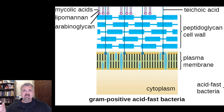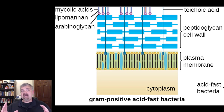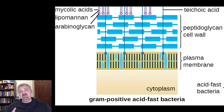So the two key atypical cell walls would be the wall-less organisms — think the Mycoplasmas — and then the acid-fast bacteria, which have this waxy mycolic acid covering around their cell walls. That should do it for cell walls. I hope this helps. Have a wonderful day. Be blessed.